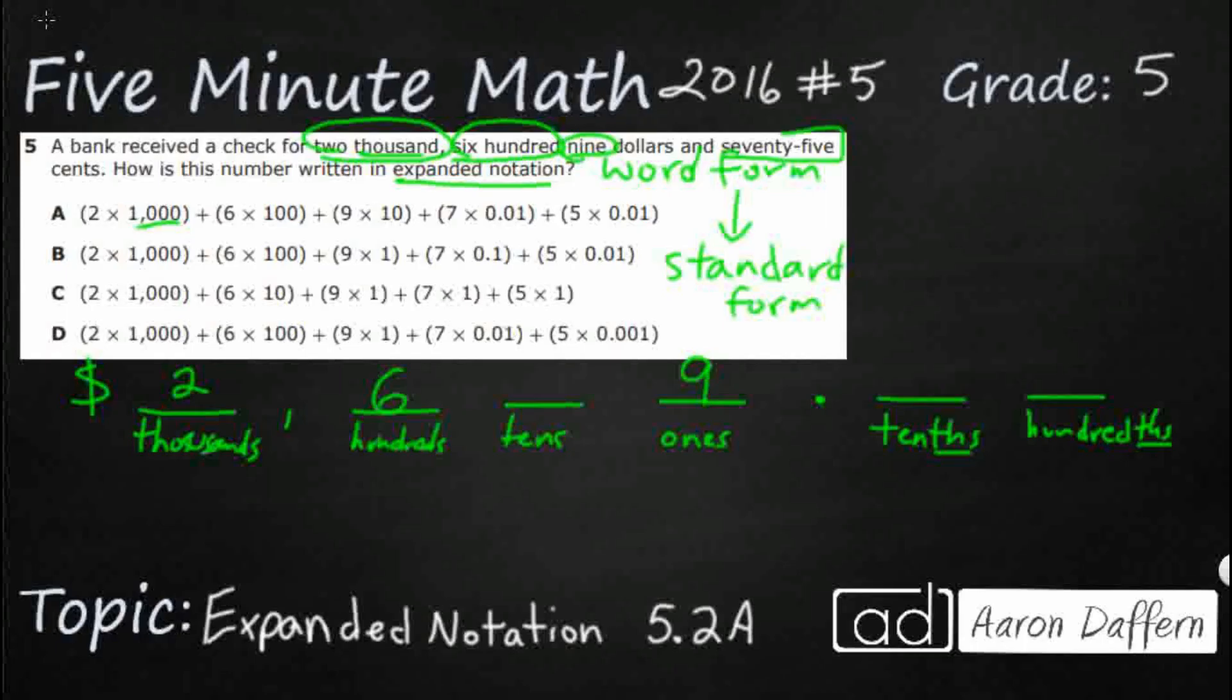And 75 cents. So we're going to put 75 cents. So we've got a blank. That's always kind of a trick is they don't always give you a digit for every single place value. So 609, that looks like 609 right there. And so I've got my $2,609 and 75 cents.